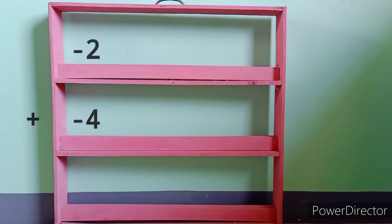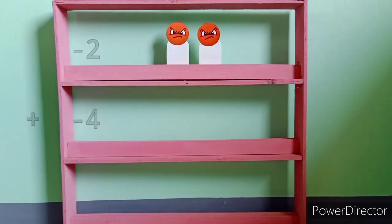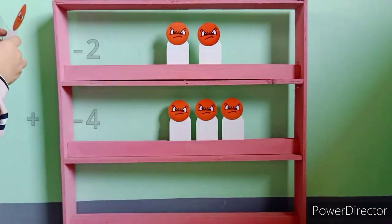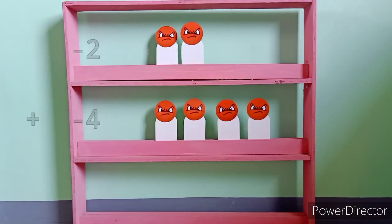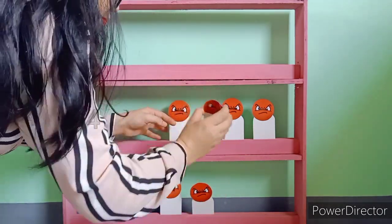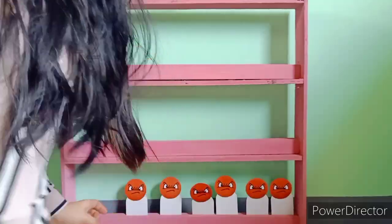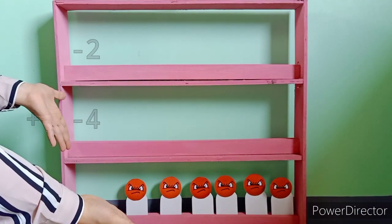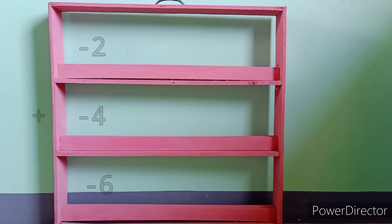Let's have this first example: negative 2 plus negative 4. Can you see any opposite numbers? Or can you see a pair of a happy and an angry face that can be eliminated? Since we do not have opposite numbers here, what is left will be the answer. Therefore, negative 2 plus negative 4 is equal to negative 6.